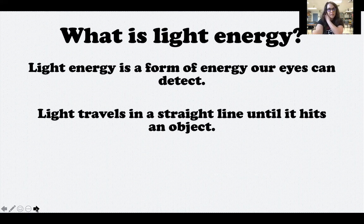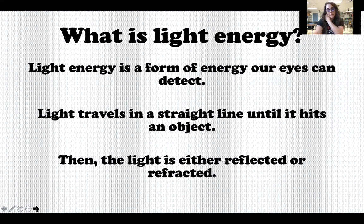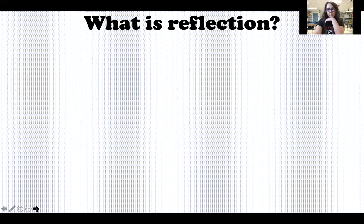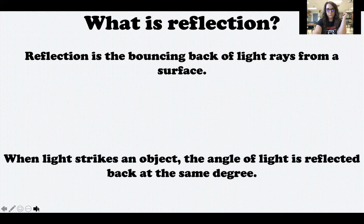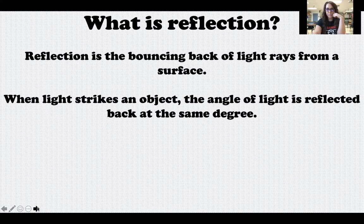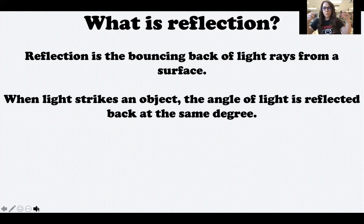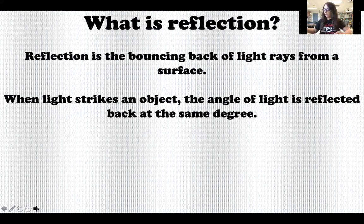Light energy is a form of energy our eyes can detect. Light travels in a straight line until it hits an object, then the light is either reflected or refracted. Let's talk about reflection first — this is probably the word you're more familiar with. Reflection is the bouncing back of light rays from a surface. When light strikes an object, the angle of light is reflected back at the same degree. If a laser pointer hits a mirror at a 45-degree angle, the light bounces off at a 45-degree angle — whatever angle the light hits the object is the same angle it bounces off.